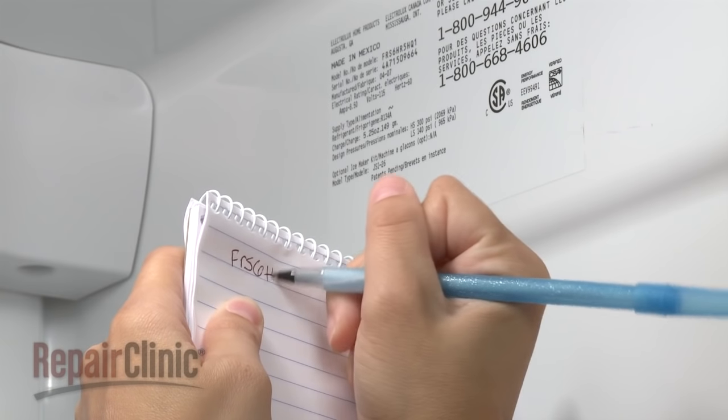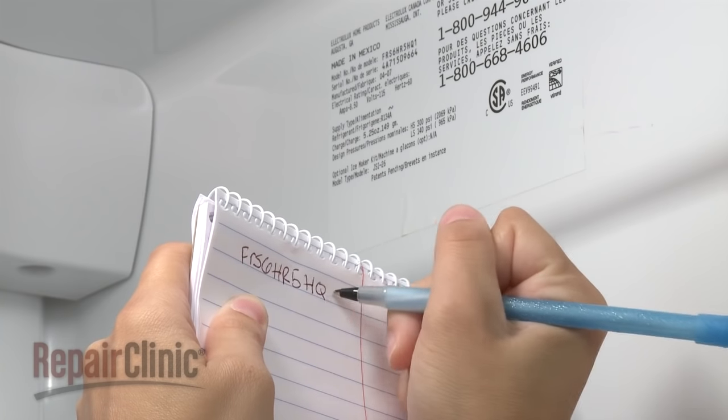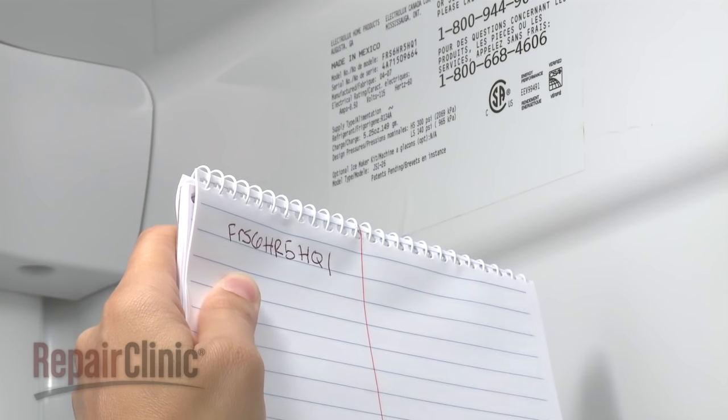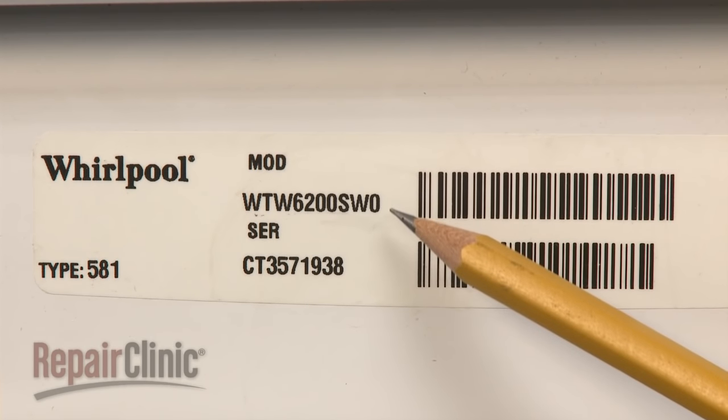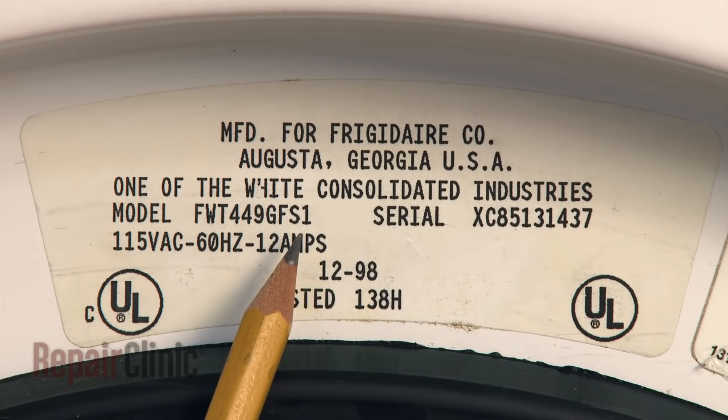Be sure to write down the complete model number once you find it, keeping in mind that numbers and letters may often look similar to each other. For example, a zero can be mistaken for the letter O, and the numeral 1 can look like a lowercase L.